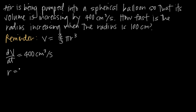So we can say the radius is 100 centimeters. And what have we been asked for? How fast is the radius increasing — in other words, how fast is the radius changing? How fast the radius is changing we call dr/dt, or the rate of change of the radius with respect to time. This is what we need to figure out; we need to solve for dr/dt.